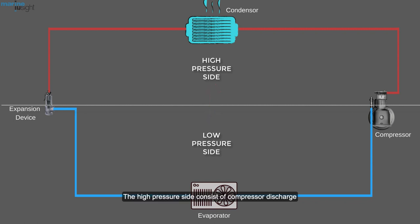The high pressure side consists of compressor discharge, condenser and inlet of expansion valve. The low pressure side comprises of discharge of expansion valve, evaporator and compressor suction.